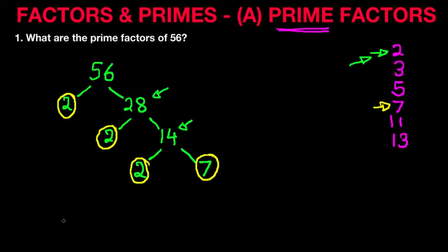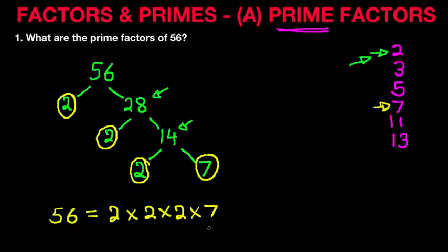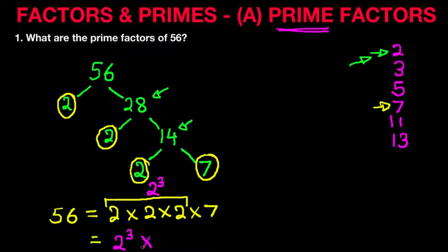Therefore, to answer the question, the prime factors of the number 56 are 2 times 2 times 2 times 7 — those are all the ones that we have circled. And what we can do is simplify this: because there are 3 twos, we write 2 to the power of 3. So the answer becomes 2 to the power of 3 times 7. Those are the prime factors of the number 56.